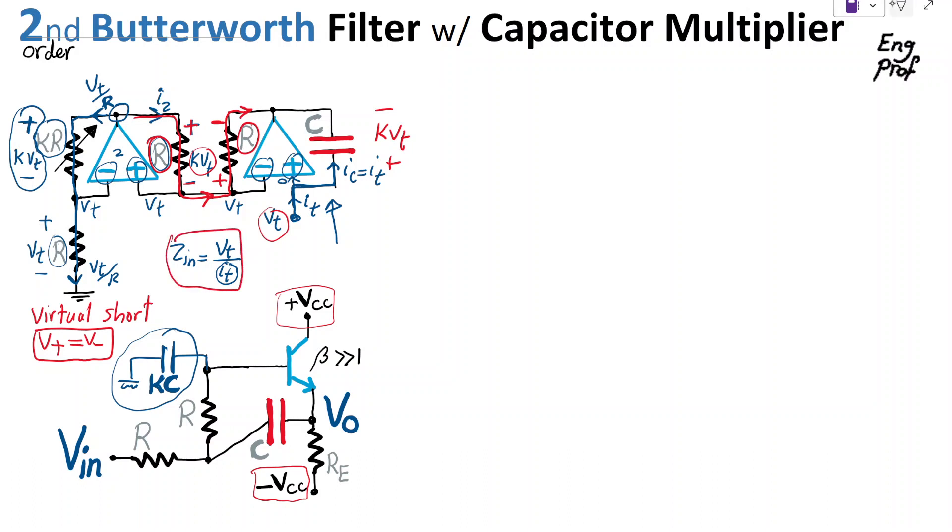Let's deal with ZIN. ZIN is equal to VTest divided by ITest, which is VTest divided by ICap. So I can say VTest over VCap divided by ZCap. Impedance of cap is VTest divided by VC, which is KVT divided by ZCap, which is one over CS. So we get simply one over KCS, exactly as we said.